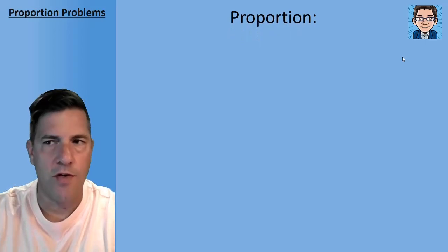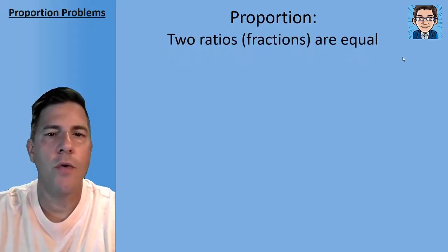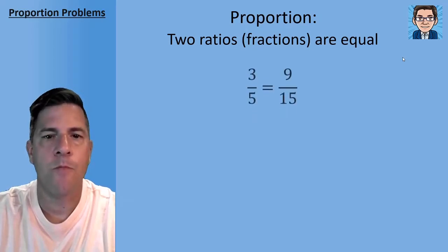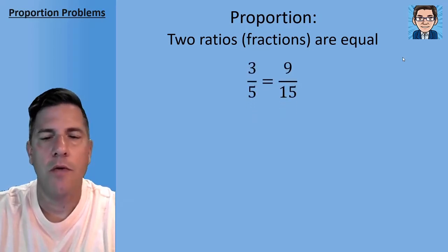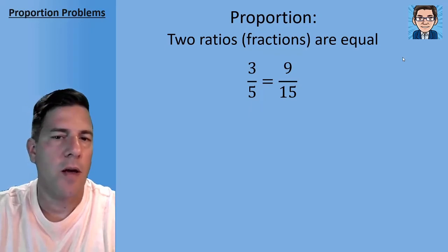Okay, so what is a proportion? A proportion is just two ratios or fractions that are equal to each other. So 3/5 equals 9/15, that's a proportion, two fractions are equal. You can see the fraction on the right is just three times on the numerator and three times on the denominator.